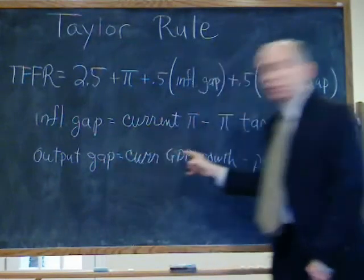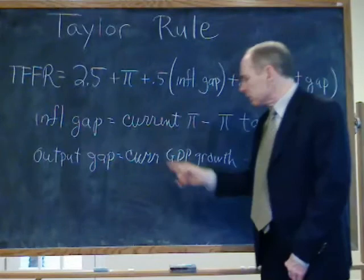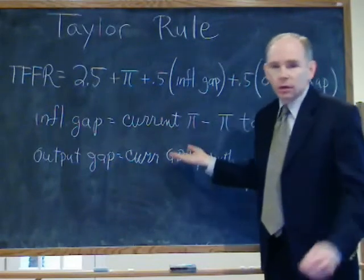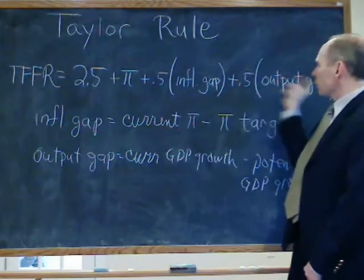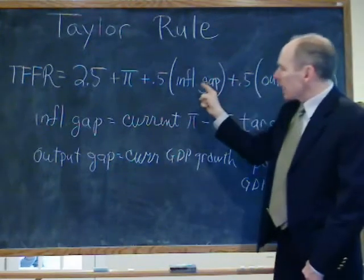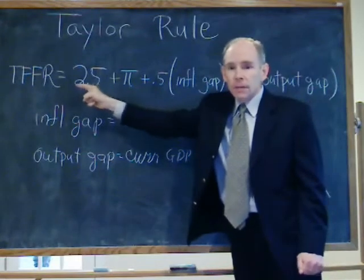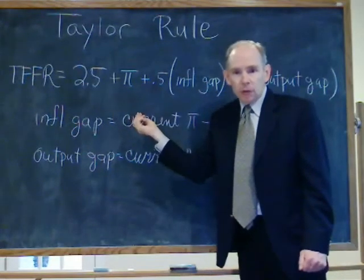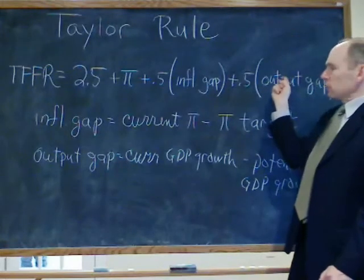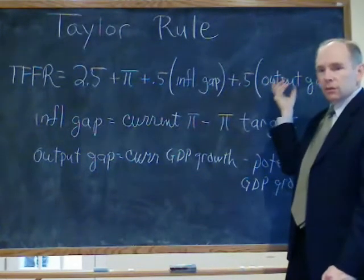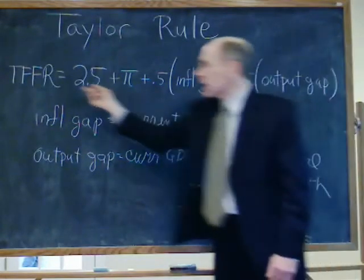Plus 0.5 times what's called the output gap. The output gap is current GDP growth minus potential GDP growth, which is usually 3% in the United States. So you can see how if you have a lot of inflation, you'll get a higher Fed Fund's target rate because you should cool down the economy. Or if you have a strong economy — say GDP has grown at 4% — that gives you 4 minus 3 times 0.5, telling you to add half a point to the target Fed Fund's rate.